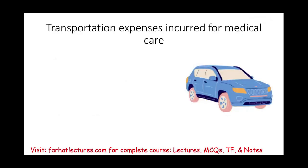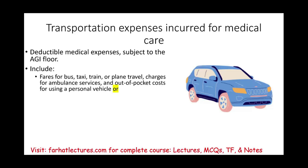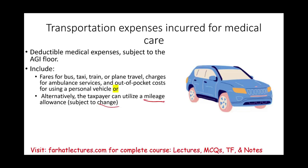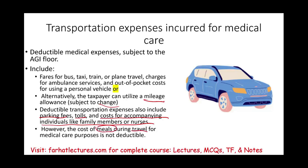Transportation costs incurred for medical care are also deductible, subject to the AGI floor. Deductible transportation expenses include taxi, train, plane fares, ambulance charges, and out-of-pocket personal vehicle costs — you can use the government mileage allowance instead. Parking fees and costs for accompanying individuals such as a family member or nurse are also deductible. However, meal costs during medical travel are not deductible, since you would eat regardless of whether you're home or traveling.